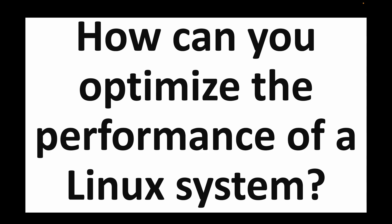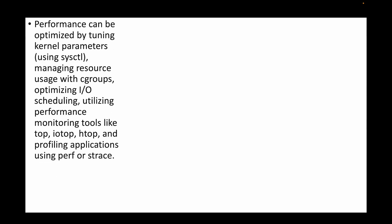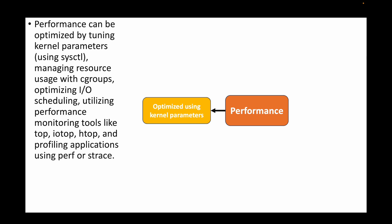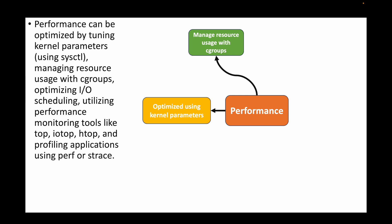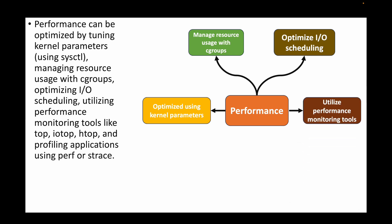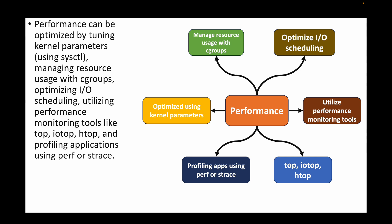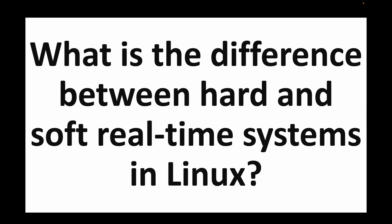The next question is: how can you optimize the performance of a Linux system? We can tune kernel parameters using the sysctl command, manage resource usage by implementing cgroups, optimize I/O scheduling, and utilize performance monitoring tools like top, iotop, and htop. We can also profile applications using tools like perf or strace to optimize the performance of the Linux machine.